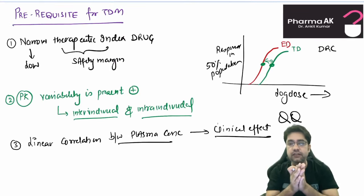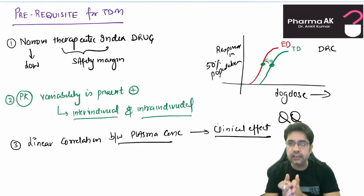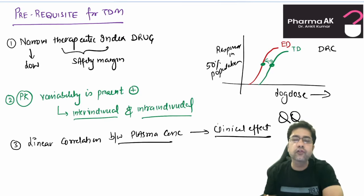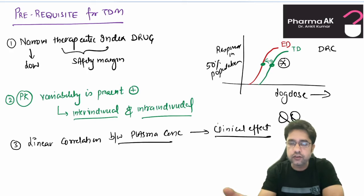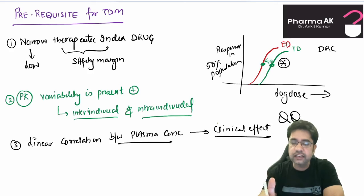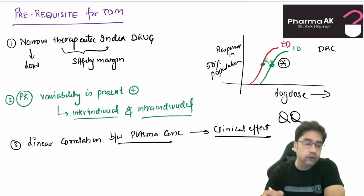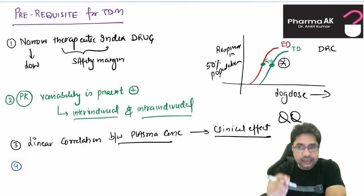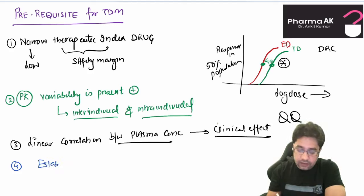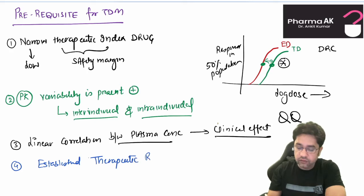Remember, if plasma concentration does not relate with the toxicity or effect of a drug, then there is no point doing TDM, because we assume that if plasma concentration is above TD — toxic dose — most people will experience a toxic effect. If they are not, there is no point doing TDM. Because of this reason, for any drug for which we are doing TDM, there must be an already established therapeutic range. We must know the therapeutic range of a drug. For example, the therapeutic range of phenytoin is between 10 to 20 milligrams per liter.